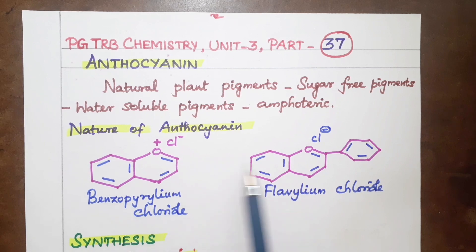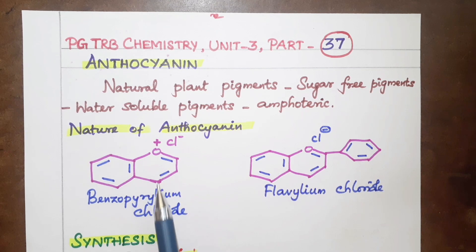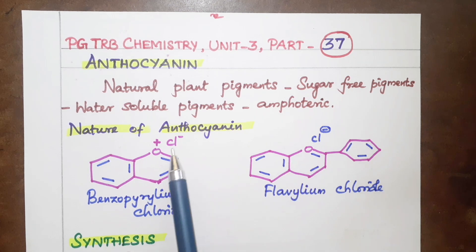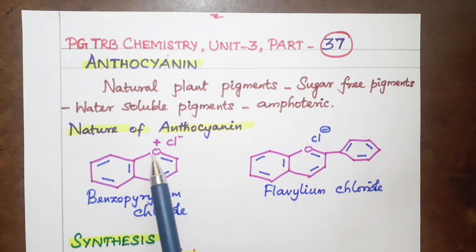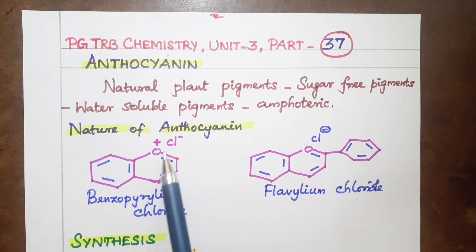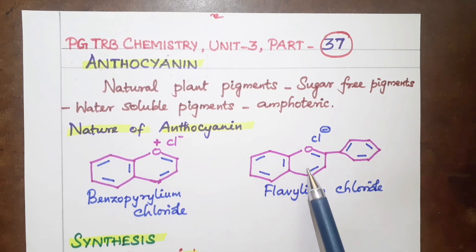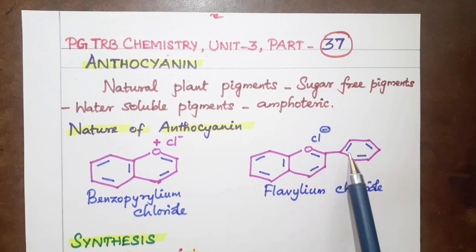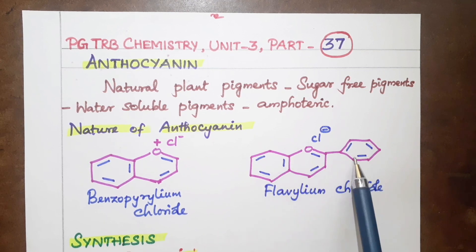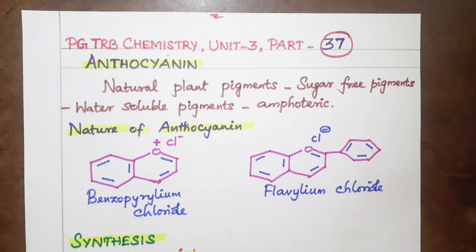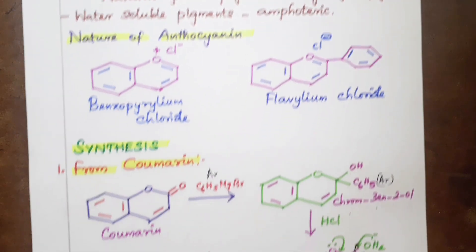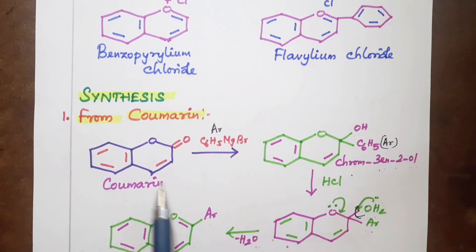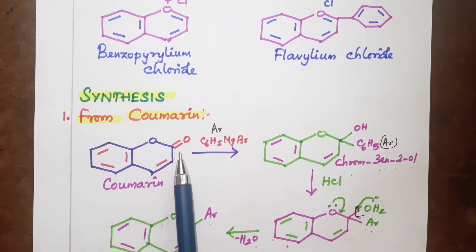The anthocyanin ring structure is possible as benzopyralium chloride and flavium chloride. In this structure, the benzene ring contains chlorine, and the benzene ring is joined to a pyrylium ring. This is the basic nature of the anthocyanin structure.